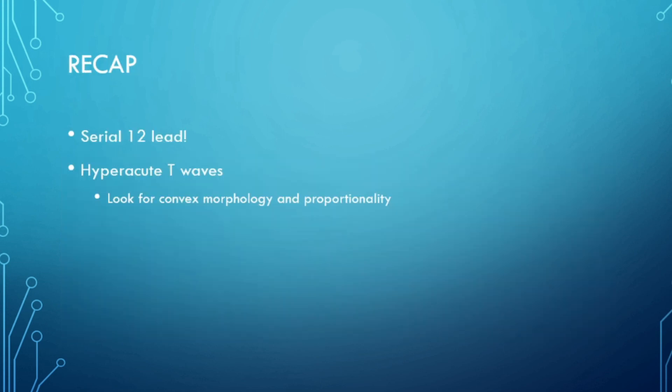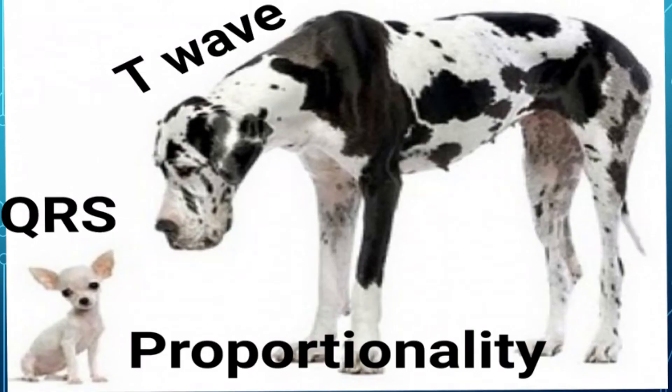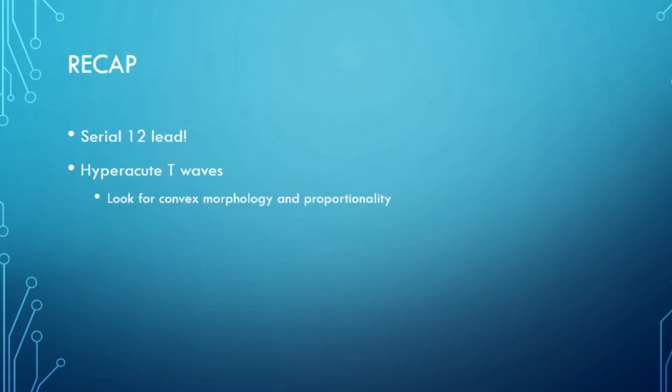Let's do a recap. Two big things to remember: serial 12-leads are a necessity — kill a few trees if that's what it takes to convince a physician to activate the cath lab. Be a better provider and a patient advocate. And look for that frowny convex morphology on your hyper-acute T waves — symmetry, broad base — and don't forget QRS to T wave proportionality. Medicine is all about baby steps. My name is Matt; I hope you guys enjoyed this.